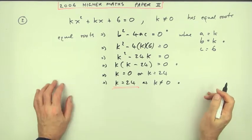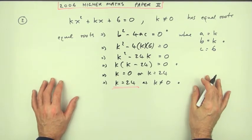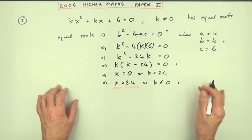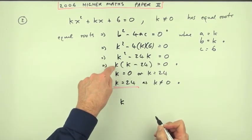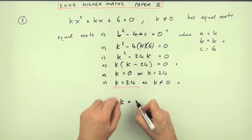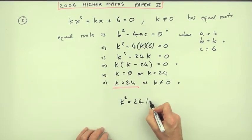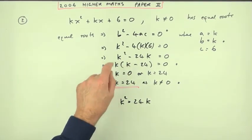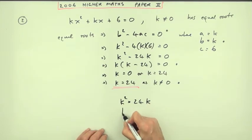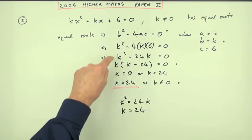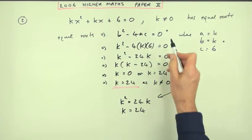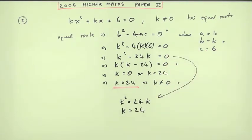Looking at the marking scheme, there's something here about a common error which says division by k, and if you did that you'd only get two marks. If from this line, instead of factorizing, you took this line and wrote k squared equals 24k, you wouldn't get this mark. If you then divided by k to get k equals 24, you wouldn't get that or the last mark either. If you took this route from here, you'd only get the first two marks out of four.